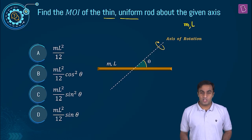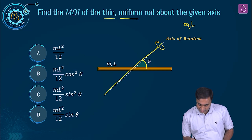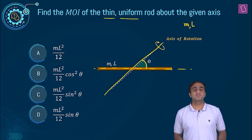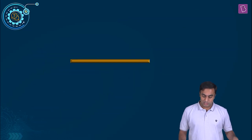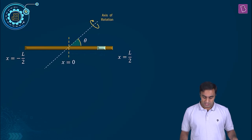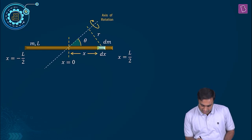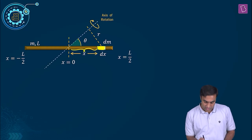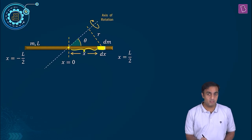The given axis of rotation is at an angle theta with the length of the rod. How do you go about it? We have to go back to our basics. We have to consider a differential element of mass dm and length dx, something like this. Let us consider this differential element to be at a distance x from the origin chosen, which also happens to be the location of the centre of mass of the rod. Let us call this point O.